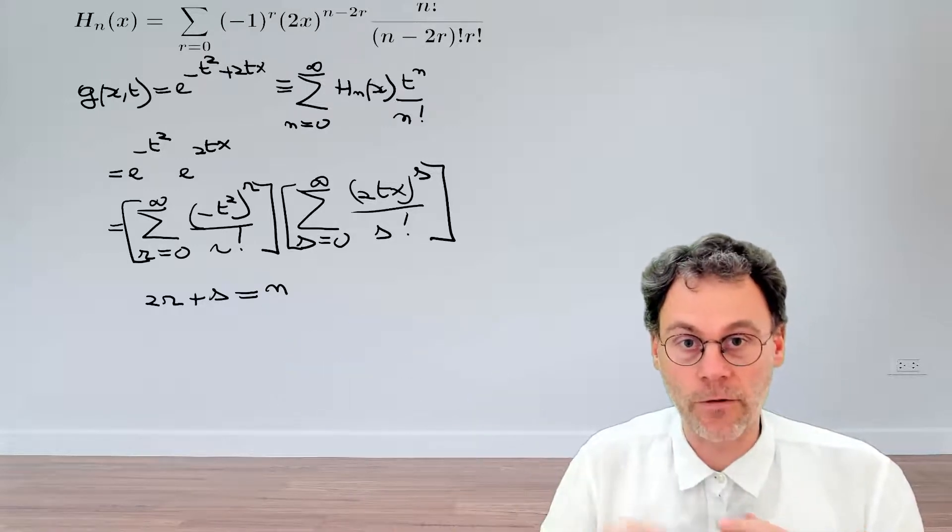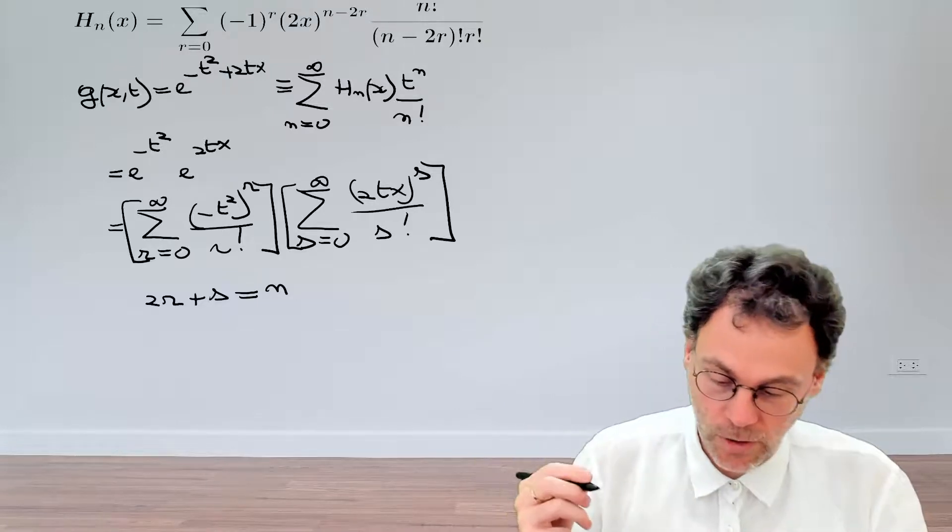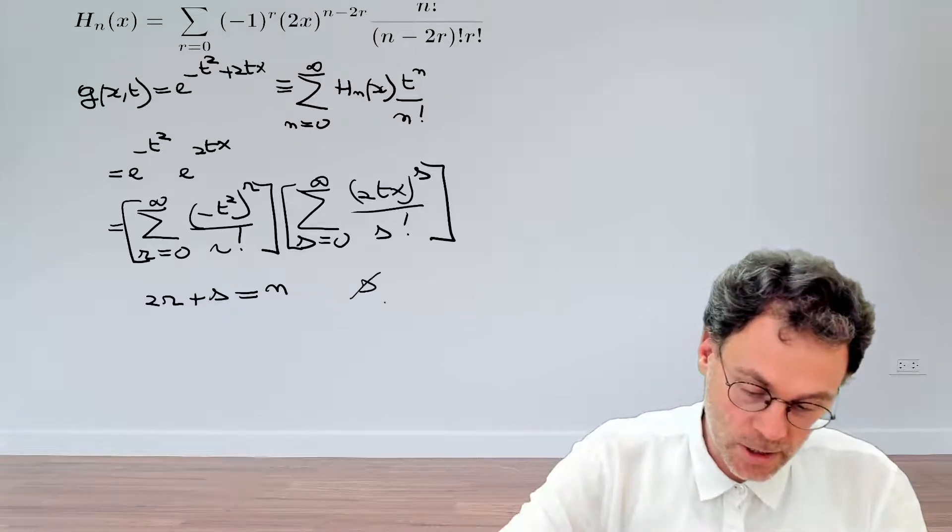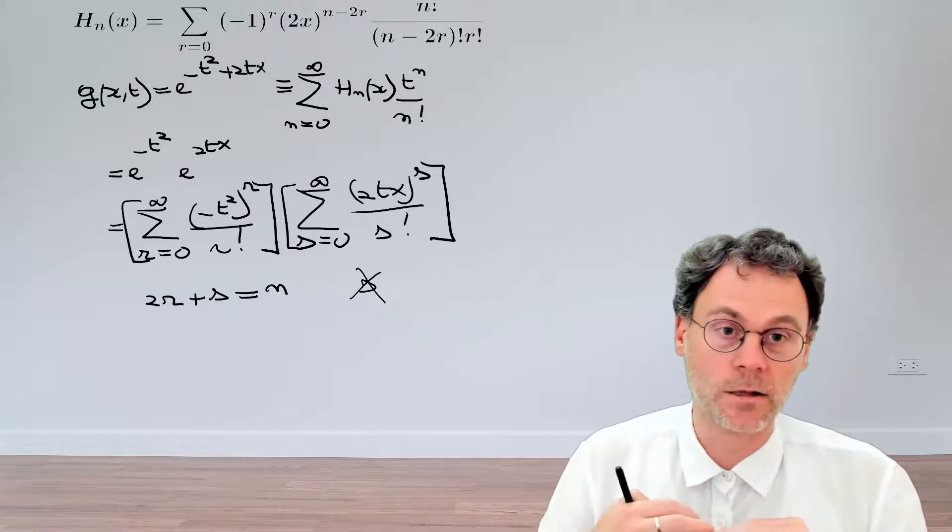So now we have three summation indices. That's just one too many. So let's get rid of one of those. Let's get rid of s and write everything in terms of r and n.